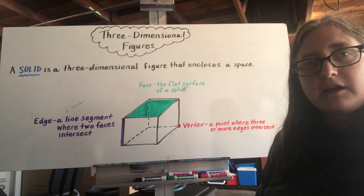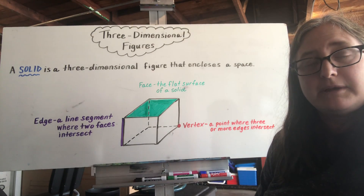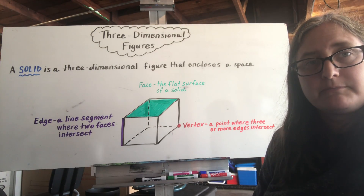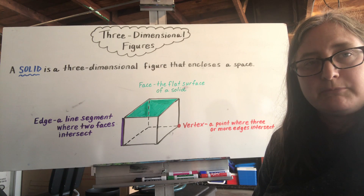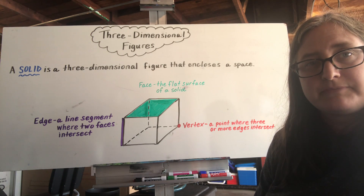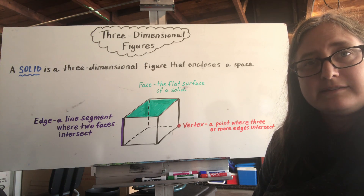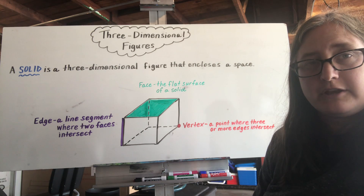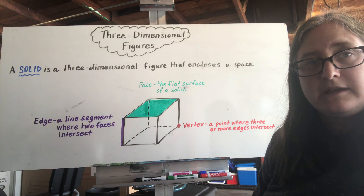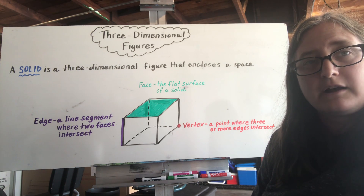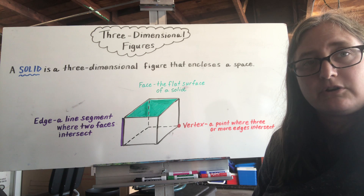Today we're talking about three-dimensional figures, or solid figures, sometimes referred to just as solids. A solid is a three-dimensional figure that encloses a space. We're going to talk today about three important characteristics of solids.